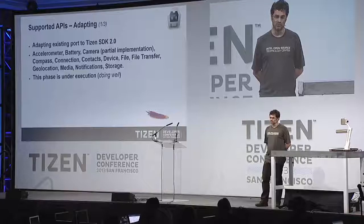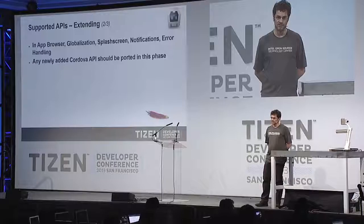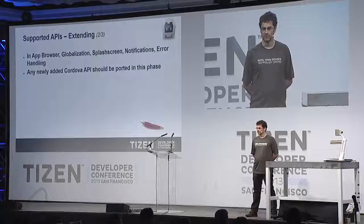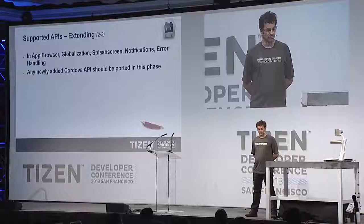This first phase is under execution and doing well — it was finished just before the conference. The second phase is about extending: supporting any newly added APIs since the last port, including in-app browser, globalization, splash screen, and notifications with a native UI prompt dialog on Tizen, and improving error handling. The good news is that the in-app browser, which opens a web view inside a web view, is already running as it was done in JavaScript.